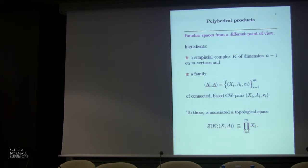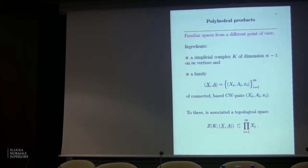Polyhedral products are familiar spaces from a different point of view. They are very simple spaces to describe, and if I make it sound complicated then I am in error, because these are extremely simple spaces but they provide insights that otherwise we would not have. A polyhedral product is a topological space and we like to make it with CW complexes. The ingredients are a simplicial complex, which always has dimension N-1, with N vertices, and a family of CW pairs with a base point.